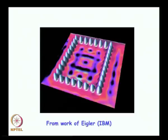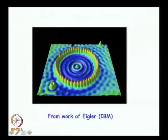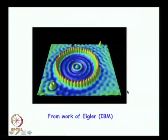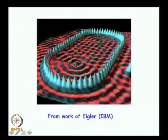He also arranged iron atoms in a circular barrier — a circular stadium — and observed that the electron density within it again had wave-like behavior, proving the wave nature of electrons. This image has become so famous that it appears in many books. He also did an elliptical one, and even there you can see the interference patterns — evidence of the wave nature of electrons.